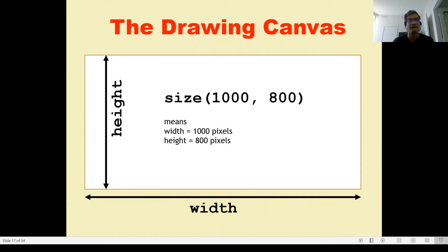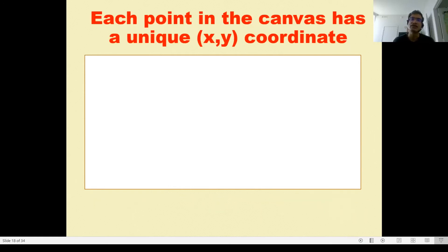All this is easy, but this also means that every point in our canvas has one unique coordinate, one x,y coordinate, typically written with bracket x comma y.